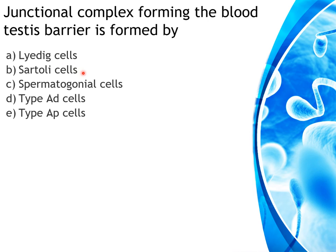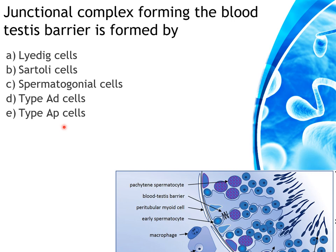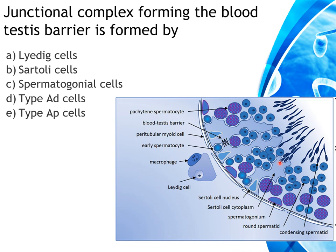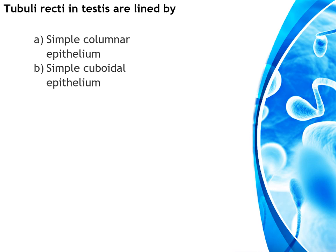Another MCQ asks: junctional complexes forming the blood-testes barrier are formed by which cells — Leydig cells, Sertoli cells, spermatogonial cells, type A dark cells, or type A pale cells? The diagram shows the epithelium of the seminiferous tubules with spermatogenic cells at various stages, the Sertoli cell, and the Leydig cell. The tight junctional complex between Sertoli cells forms the blood-testes barrier, dividing the testicular epithelium into basal and adluminal compartments. The answer is Sertoli cells.